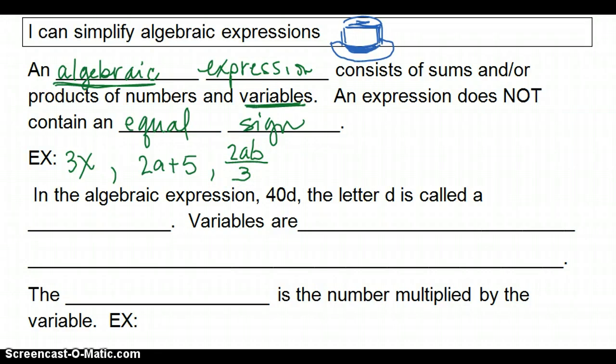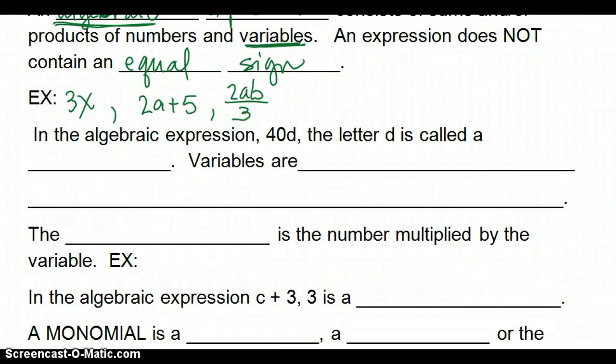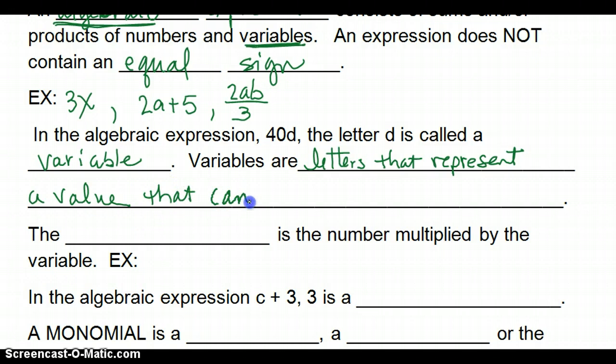These are all algebraic expressions because of the variables. In the algebraic expression 40d, the letter d is called the variable. And variables are always letters that represent a value. That's what the word variable, it comes from the word vary.